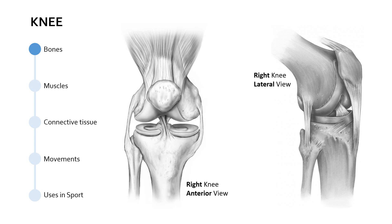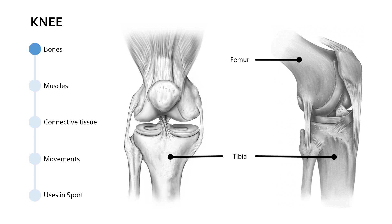In terms of the bones that make up the knee joint, we've got the largest bone in the body, which is the femur — the large thigh bone. Then coming down the knee joint, we've got the tibia, which is the larger of the two bones in the lower leg, and the smaller is the fibula. So those are the three main bones.